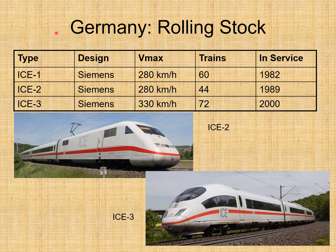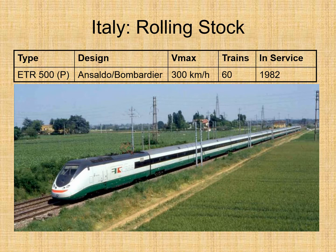Germany's high-speed trains are the ICE (InterCity Express) operating at 280 and 330 km/h. Italy operates the ETR (Elettrotreno Rapido) high-speed trains.